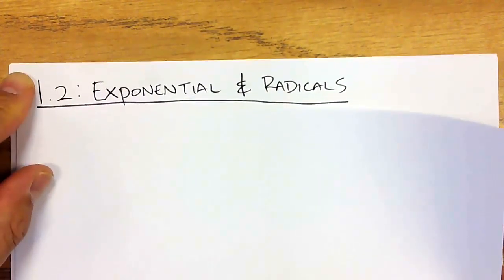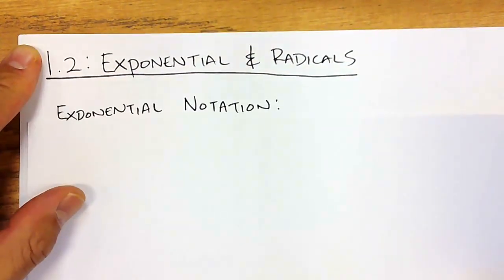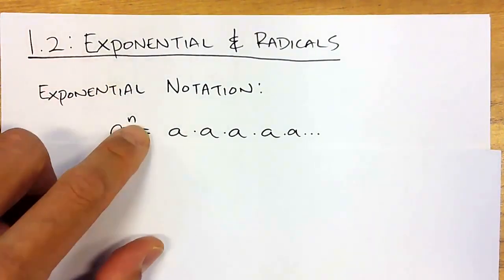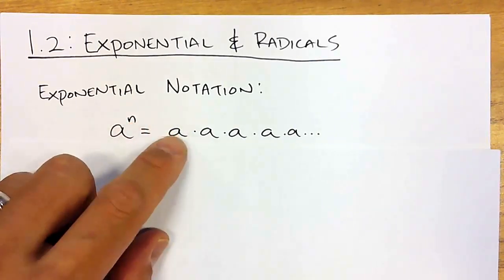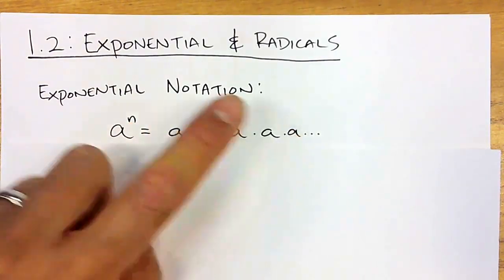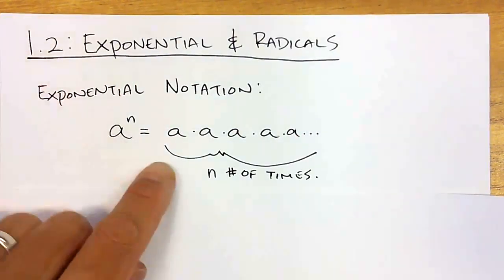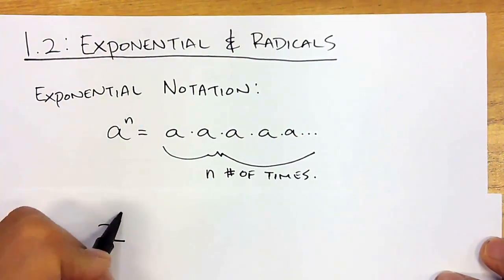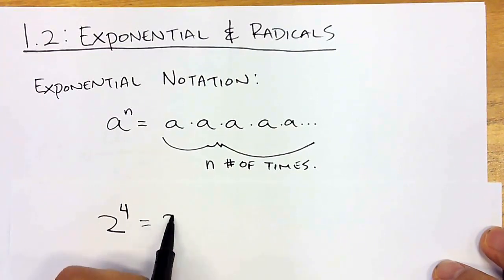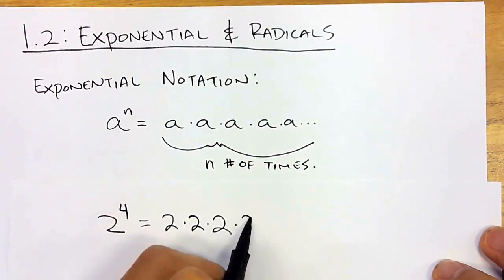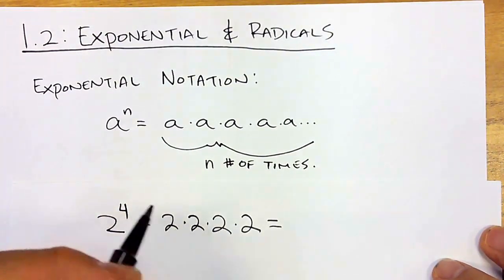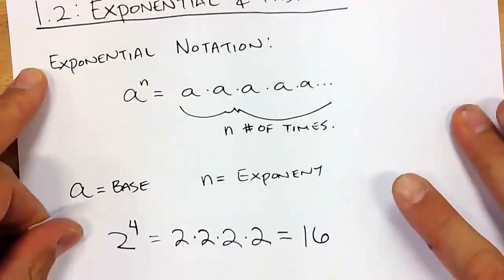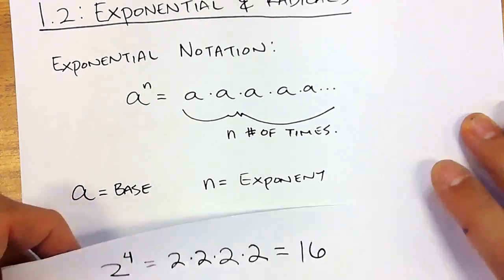This should be somewhat review, so I'm going to go pretty quickly. Exponential notation is essentially, if we have a to the n power, it's just multiplying the base a n number of times. So a to the n — for example, 2 to the fourth power equals 2 times 2 times 2 times 2, which is 16. We call a the base, and n we call the exponent.